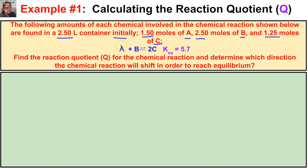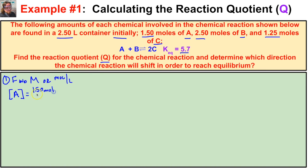The chemical equilibrium is A plus B producing C, and the equilibrium constant Keq is 5.7. We need to find the reaction quotient Q and determine which direction the reaction will shift. First, we find the molarities: the concentration of A is 1.50 moles divided by 2.50 liters, which gives 0.600 M.